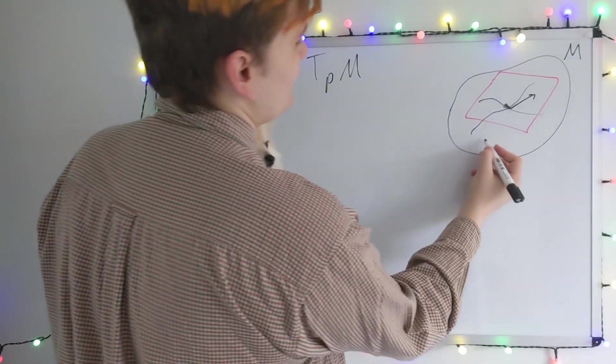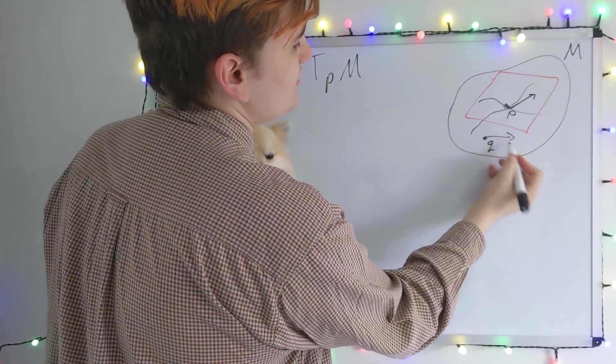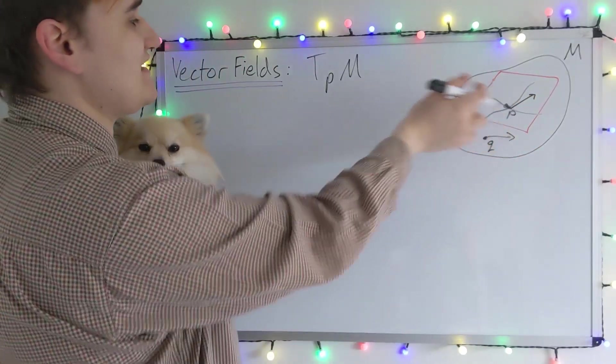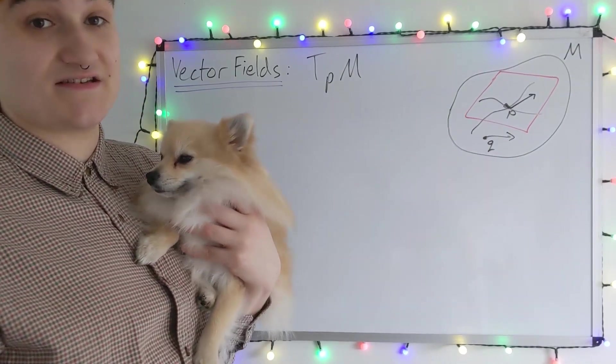We couldn't say for example, take a vector at this point, say Q, and add it to a point P in the TP tangent space. They're separate vectors, they live in entirely separate vector spaces.